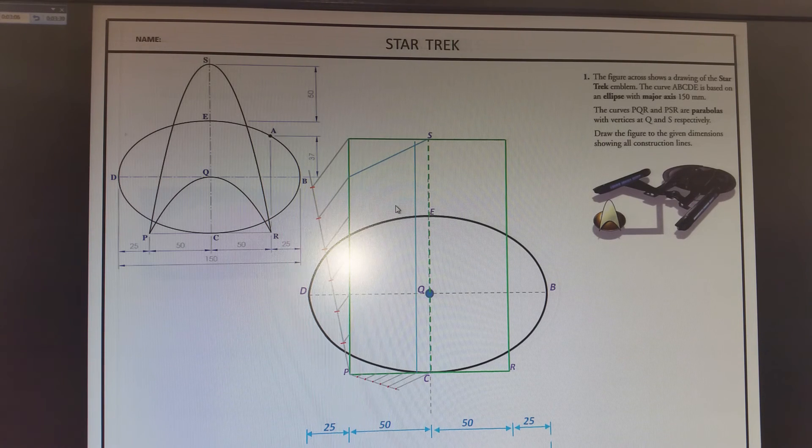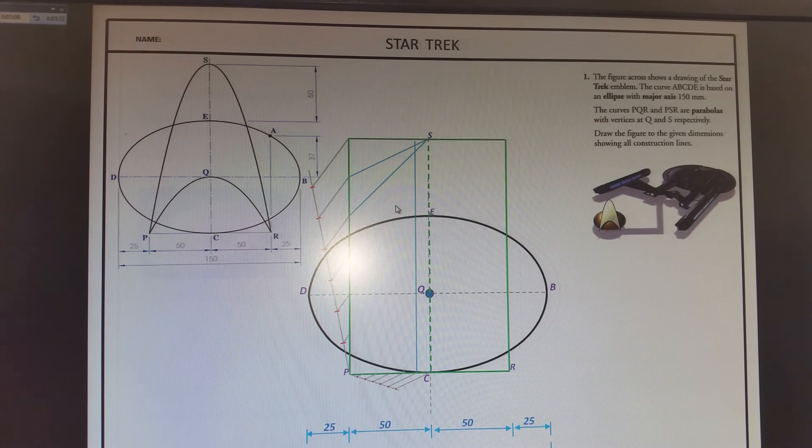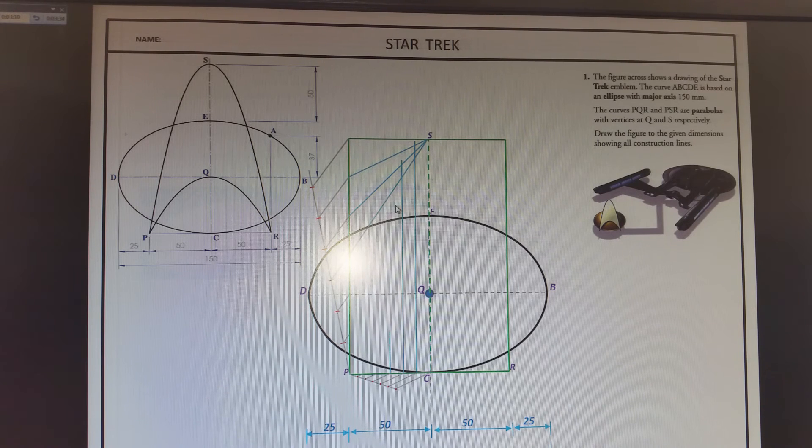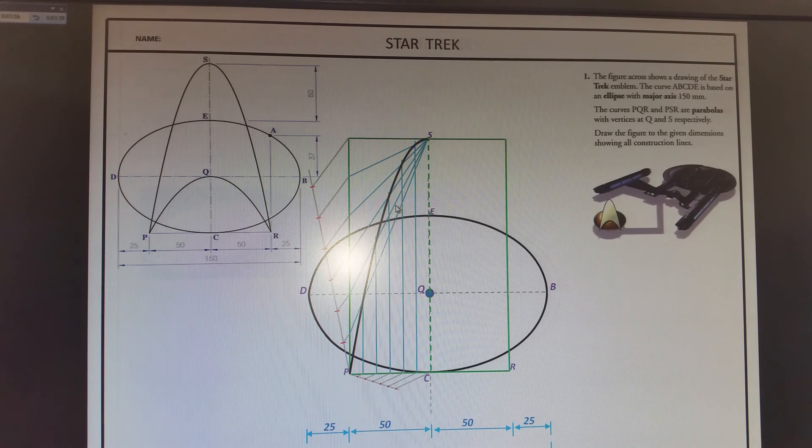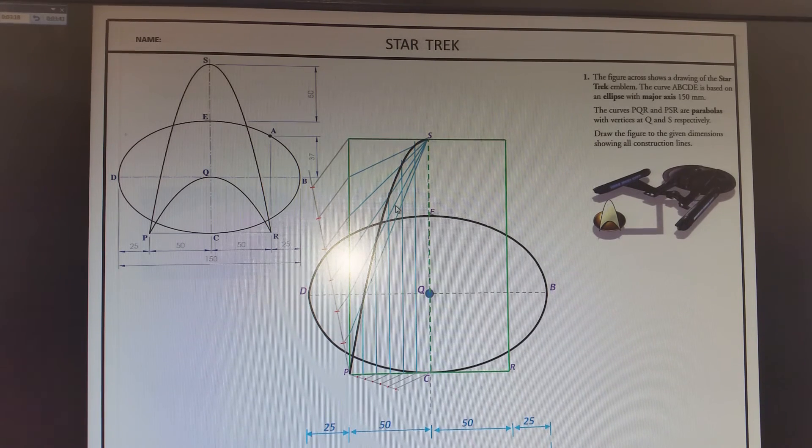S is our vertex from where our radiating lines will come from, and we'll draw them all to S, dividing half the length into 6, and the length into 6. And I'll just bring those radiating lines like that, and draw the left-hand side of the parabola.